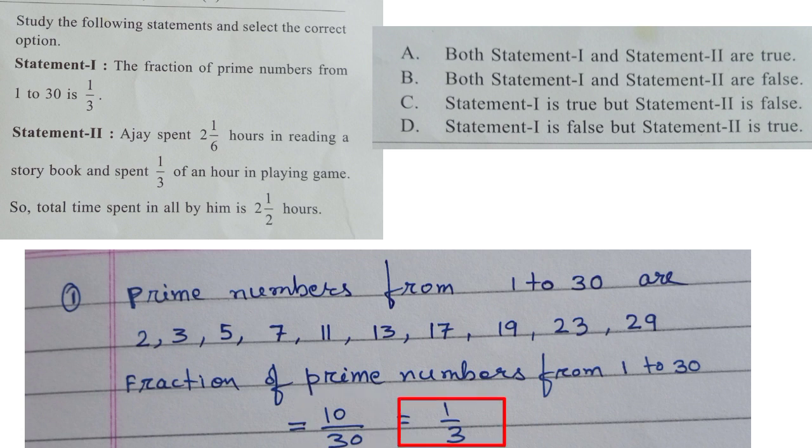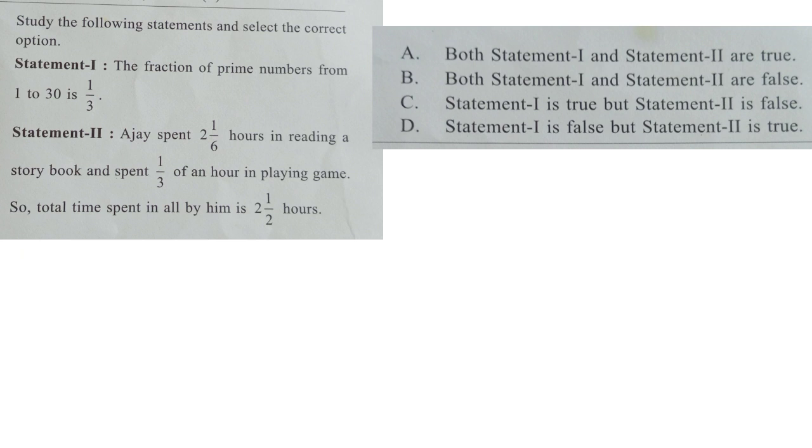Statement 2: Ajay spent 2 1 by 6 hours in reading a storybook and spent 1 by 3 of an hour in playing game. So total time spent in all by him is 2 1 by 2 hours.